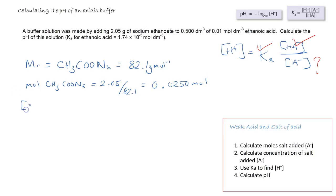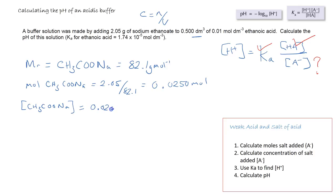The concentration of sodium ethanoate is equal to the moles divided by the volume. In this case we have got the volume in dm³, so the concentration is simply moles divided by volume — no factor of 1000 needed because we're not in cm³. So it is 0.025 ÷ 0.5, which gives a concentration of sodium ethanoate of 0.0500 mol dm⁻³.